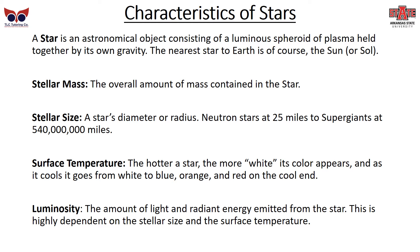There are four major characteristics that we use to classify stars. First is stellar mass — the overall amount of mass inside the star. Second is its size. Neutron stars are very, very concentrated, or only 25 miles wide, all the way to supergiant stars, which are over 500 million miles across.